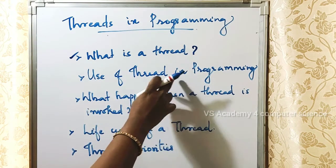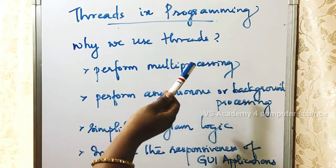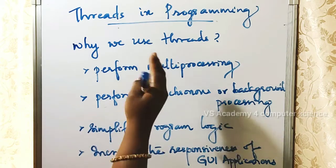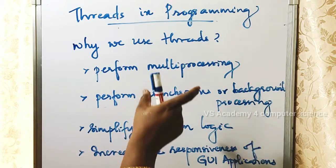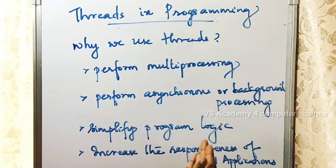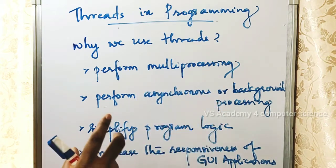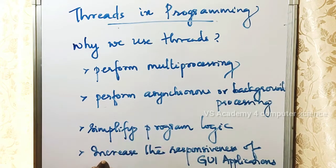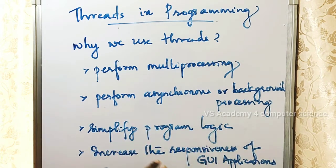Next, we will discuss the use of threads in programming. Threads are used to perform multi-processing. We can also use threads to perform asynchronous or background processing, to simplify program logic, and to increase the responsiveness of GUI (graphical user interface) applications.